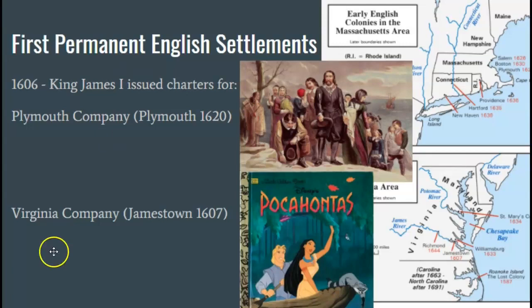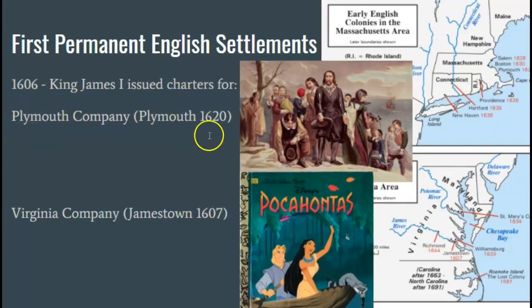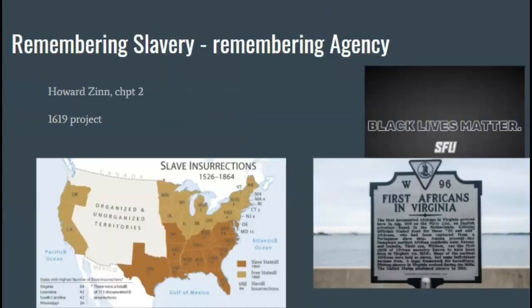The first permanent English settlements in North America were first Jamestown — that's Virginia — in 1607, and then Plymouth, which is going to become Massachusetts, in 1620. Here's Jamestown, here's Plymouth. So what we've been thinking about, and actually what a lot of Americans are thinking about right now, has been the history of labor systems generally, and of course what we've been talking a lot about is slavery.